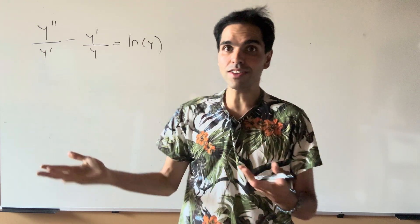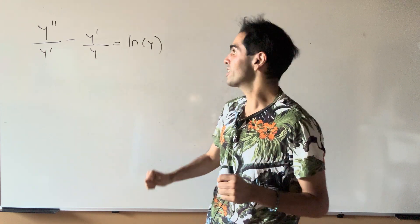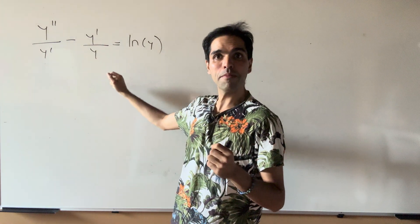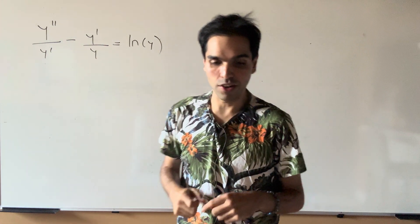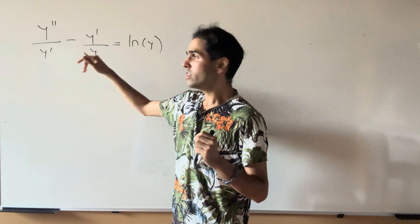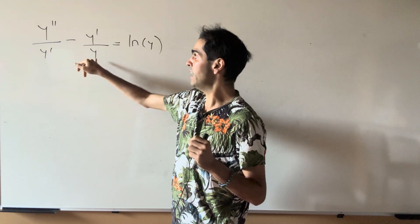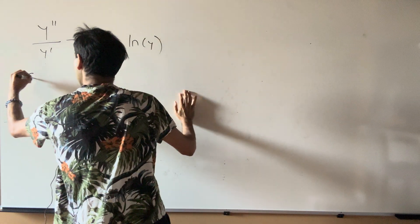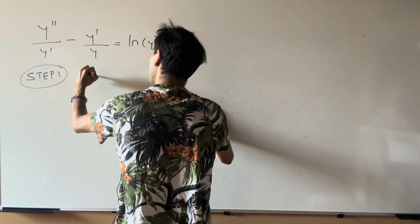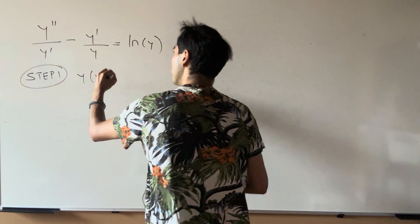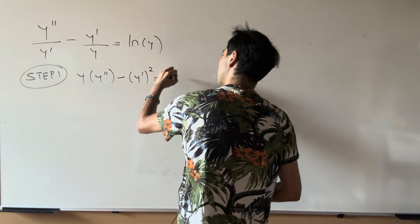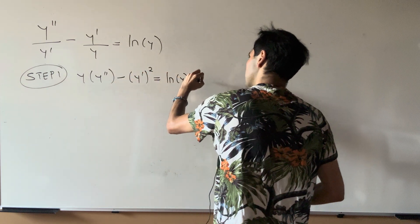Thanks for watching. Let's solve this really fun differential equation: y double prime over y prime minus y prime over y equals ln of y. The first thing to do is to get rid of the denominator, so let's multiply both sides by y times y prime in order to get y times y double prime minus y prime squared equals ln of y times y times y prime.